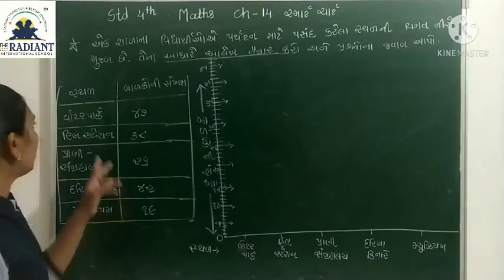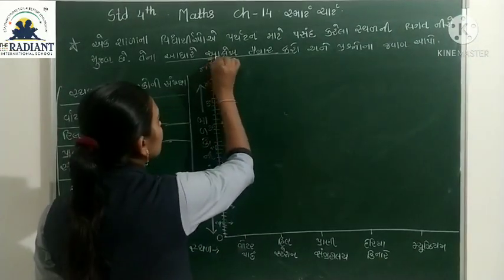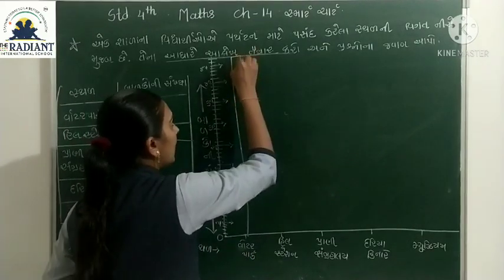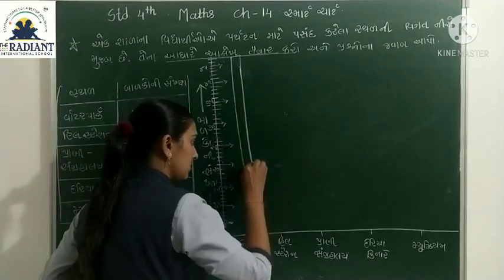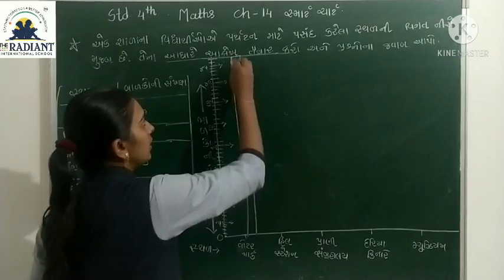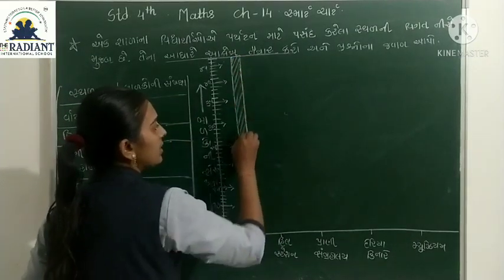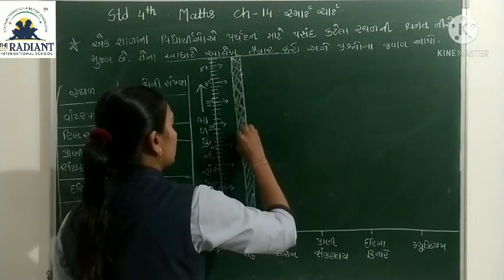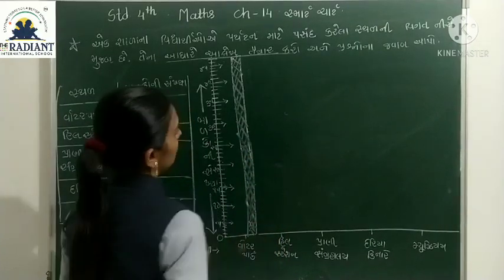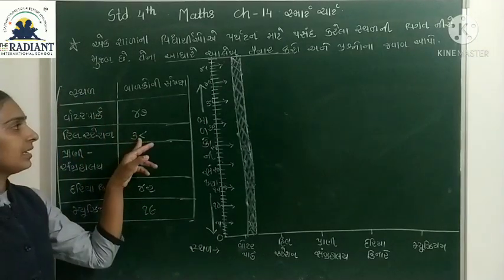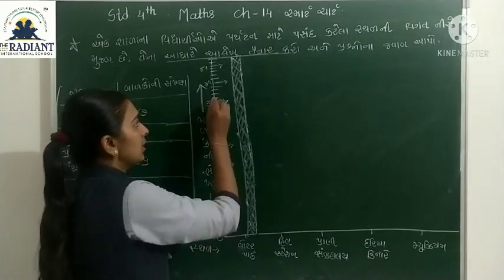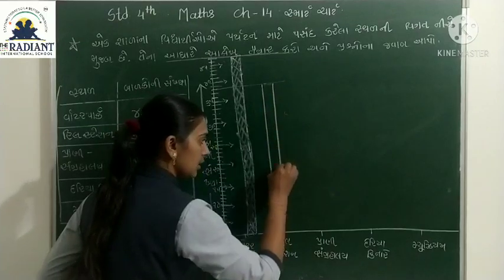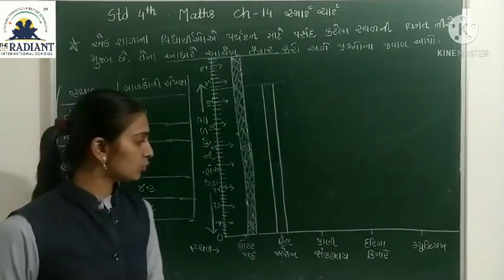સૌથી પહેલાં વોટર પાર્ક - ત્યાં જનારની સંખ્યા સૌથી વધારે છે, 44. તમે ઇચ્છો એ ડિઝાઇન (રંગ/પેટર્ન) કરી શકો. હવે હિલ સ્ટેશન - ત્યાં જનારા બાળકોની સંખ્યા 38 છે. 35 પછી 36, 37, 38 - હિલ સ્ટેશન 38 સુધી. તમારા હિસાબે ડિઝાઇન કરી શકો.